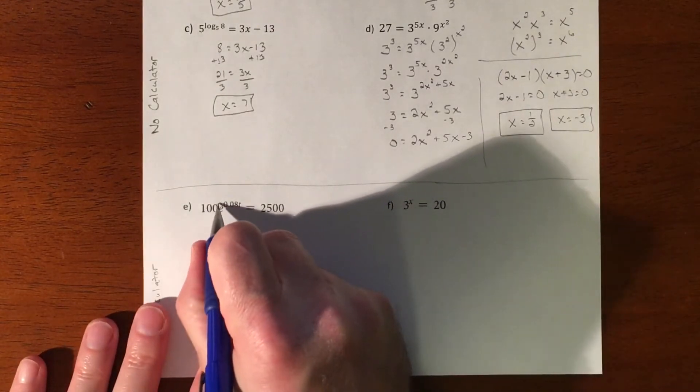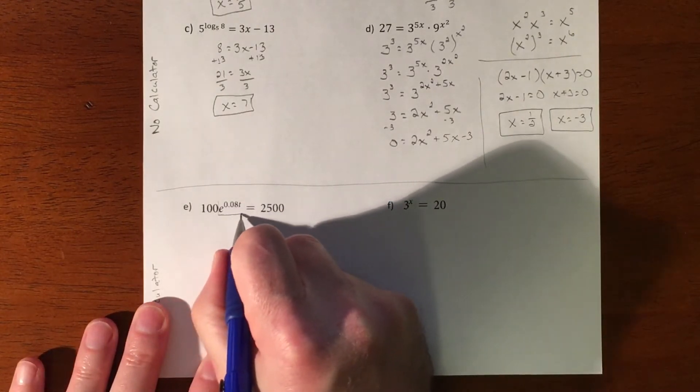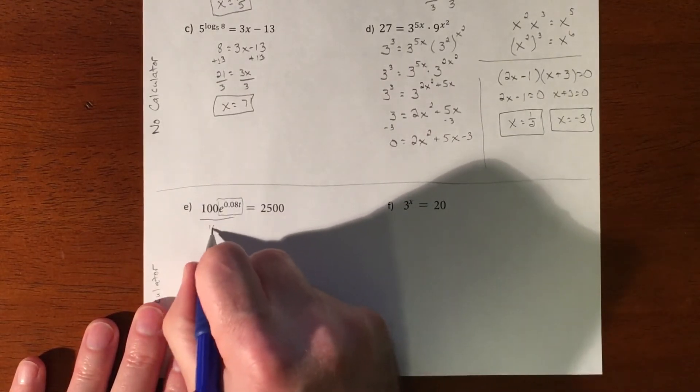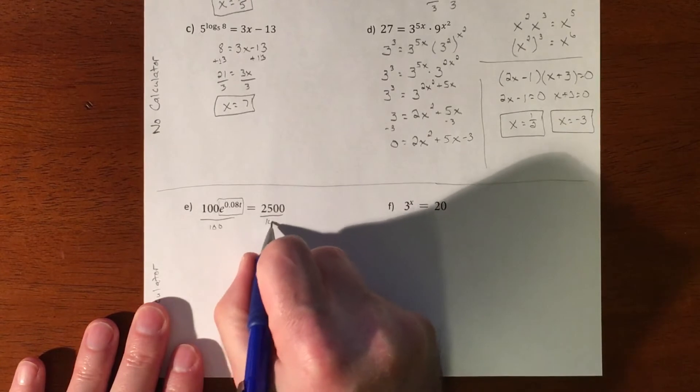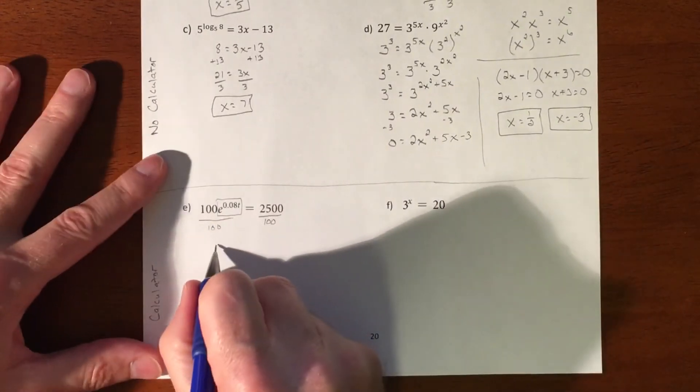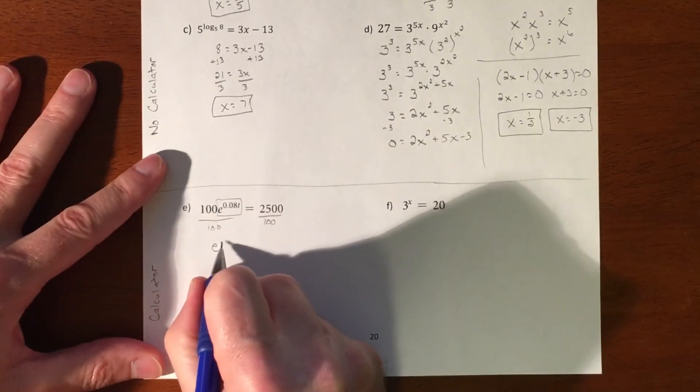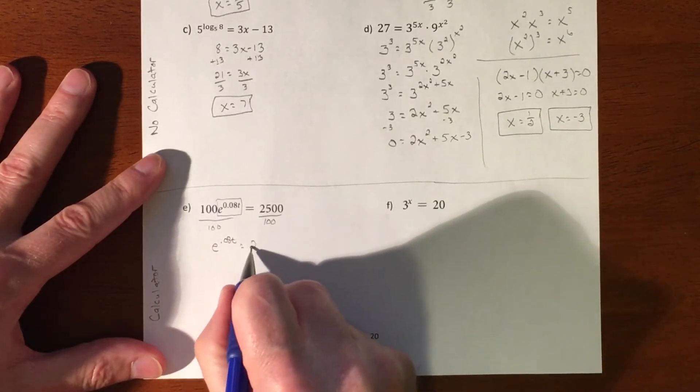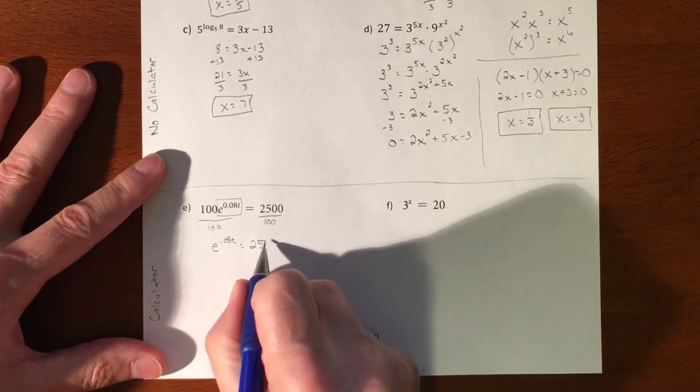So first thing is I'm going to try to isolate this piece right here, the exponential. So we're going to divide by a hundred. So we're going to have E to the point zero eight T equaling 25.